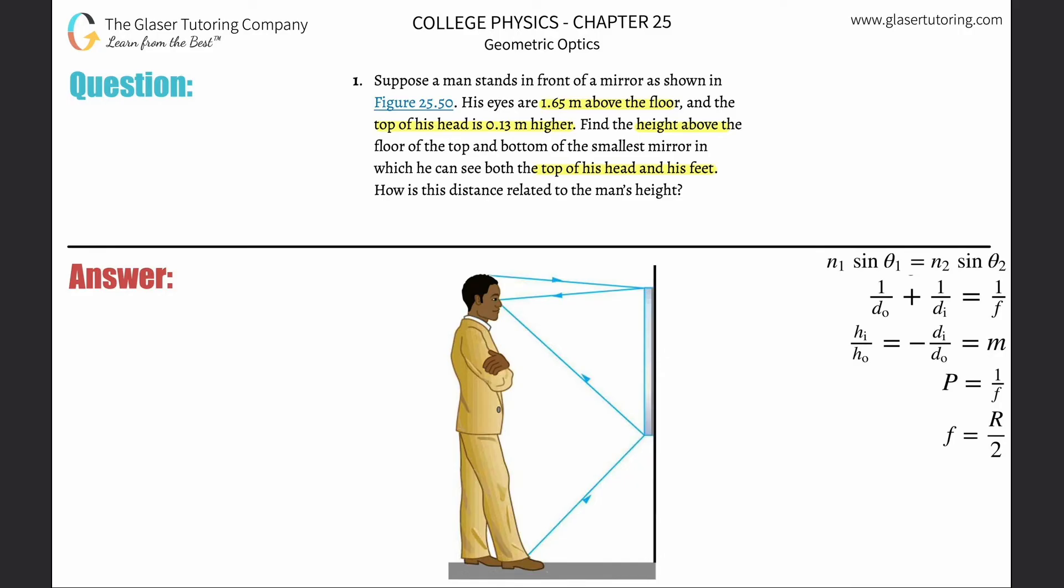Now since this is dealing with a mirror here, we're dealing with the laws of reflection. I'm going to draw a normal to the mirror, that is a perpendicular line to the plane of the mirror. What it says is that the angle of incidence has to be equal to the angle of reflection.